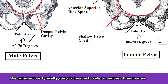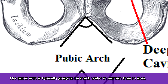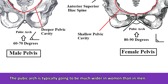Next, take a look at the pubic arch, which is this notched area right underneath the pubic symphysis. And this is going to typically be much wider in women than in men. You can remember this by thinking that when a woman gives birth to a child, she's going to have to spread her legs into a certain position, which will help facilitate the birthing process. So just think of those legs spread out — that's how this pubic arch is going to be for the female.